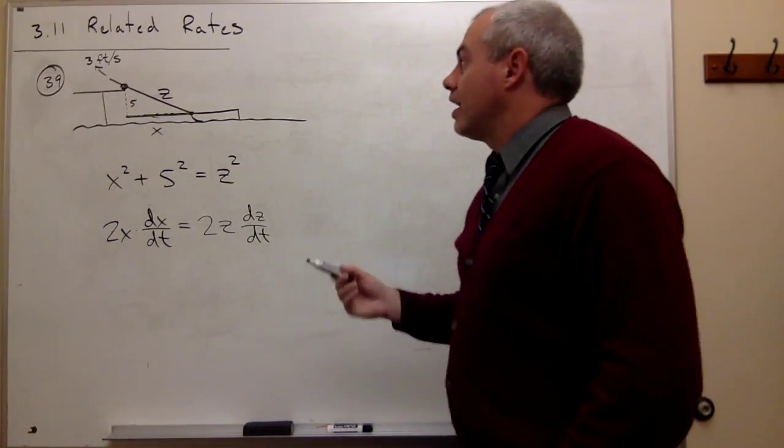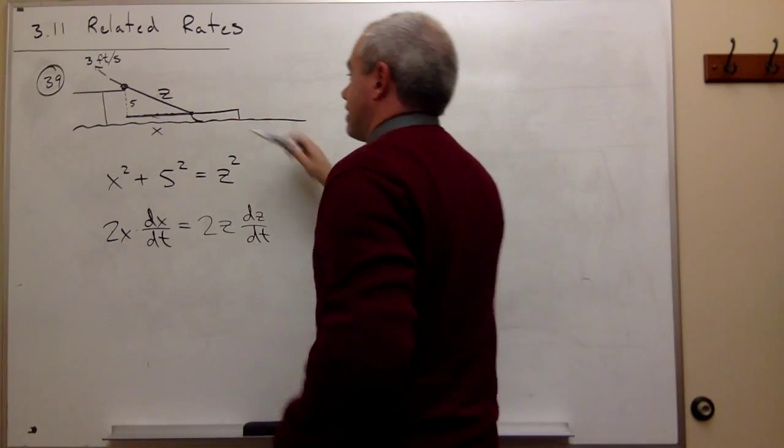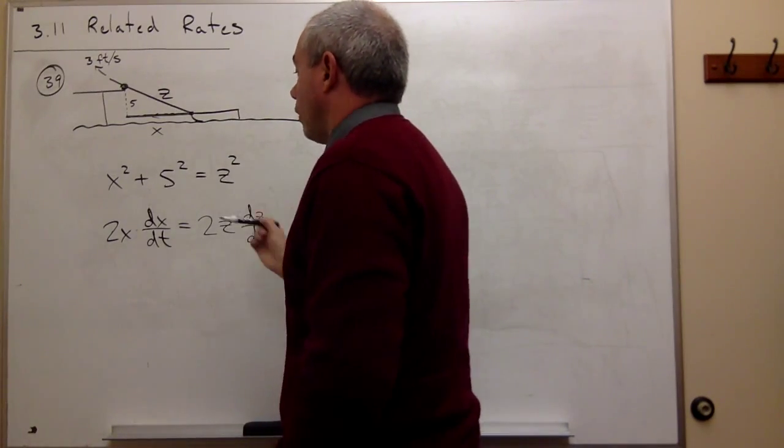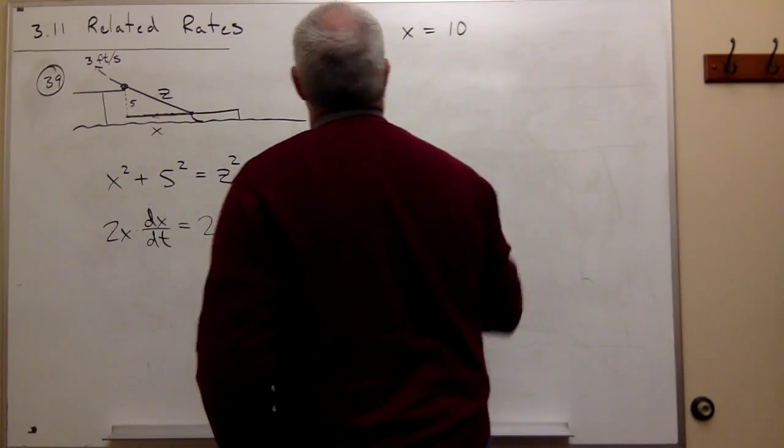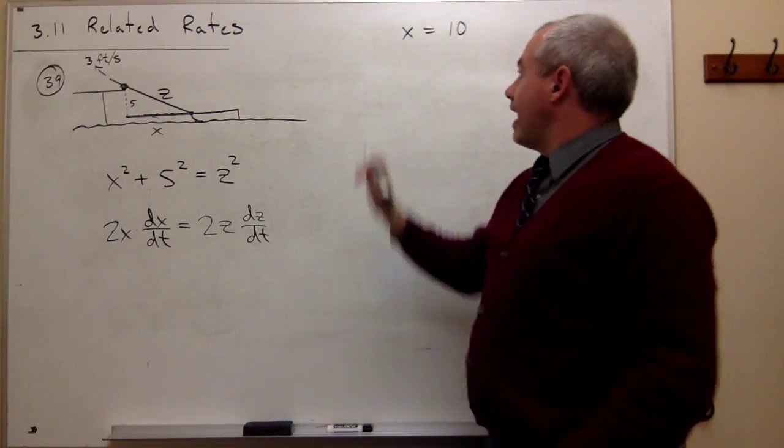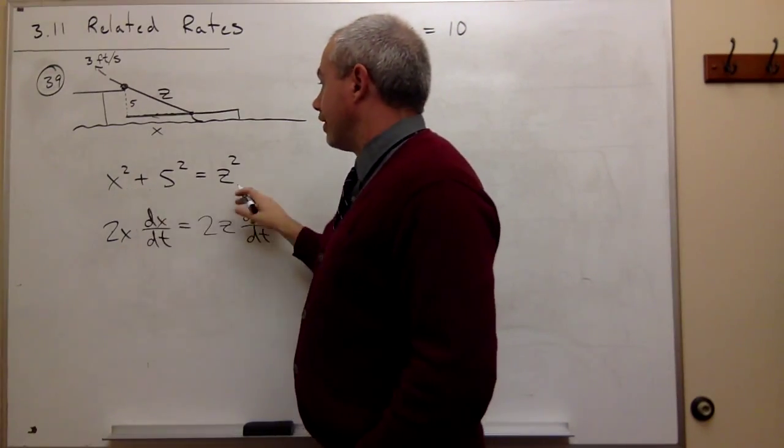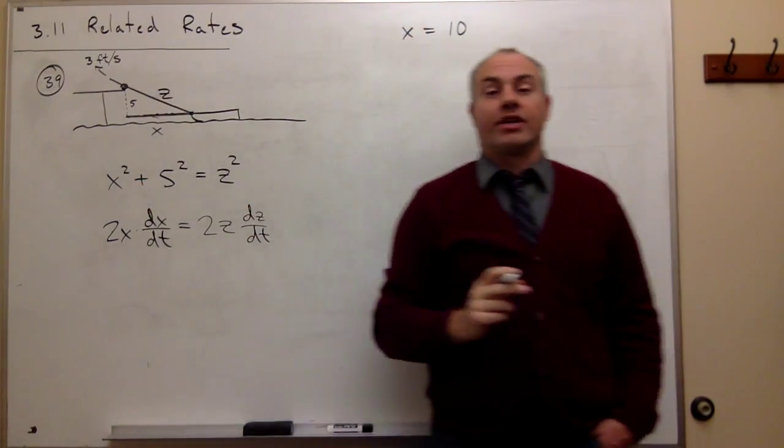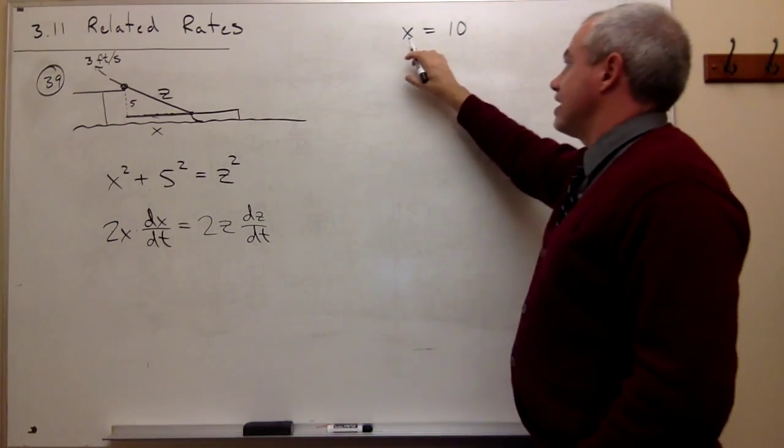So far I know two of those. I know that we're interested in how fast this thing is coming toward the dock when x is equal to 10. But when x is equal to 10, we can figure out what the z is from our original formula. We can use the Pythagorean theorem to figure out what the value of z would be if x is equal to 10.